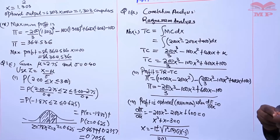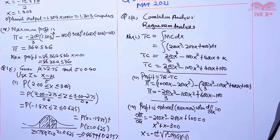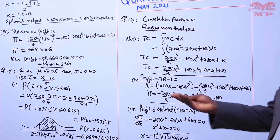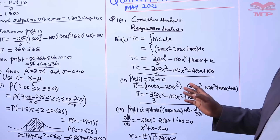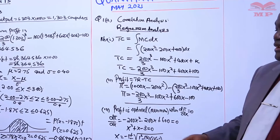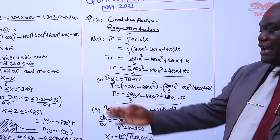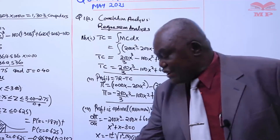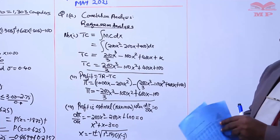Remember: when the required area is on opposite sides of the line of symmetry, add the areas. When the required area is on the same side of the line of symmetry, subtract the areas to get the difference. In this case we added because the two areas are on opposite sides.